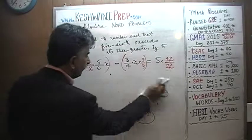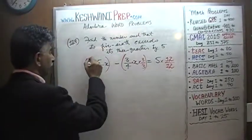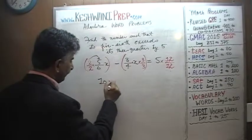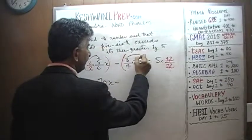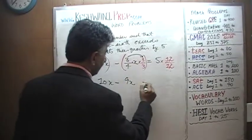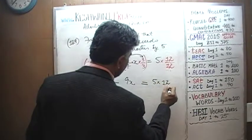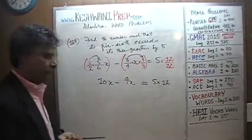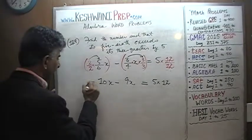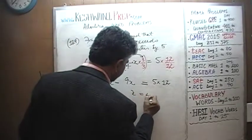Now we have 2 times 5, which is 10, so 10X, minus 3 times 3, which is 9, so 9X, equals 5 times 12. 10X minus 9X is just X, so X equals 5 times 12, which is 60. X equals 60.